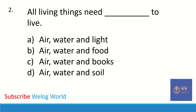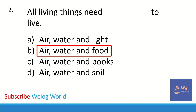All living things need dash to live. Options are: air, water and light; air, water and food; air, water and books; or air, water and soil. The correct answer is air, water and food. All living things need air, water and food to live.